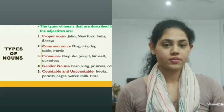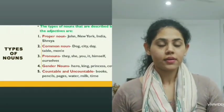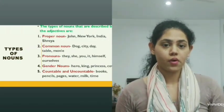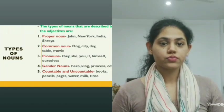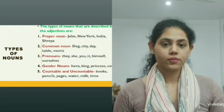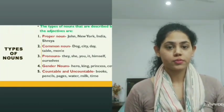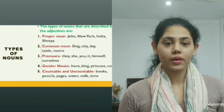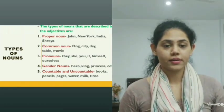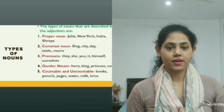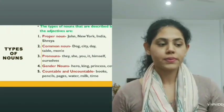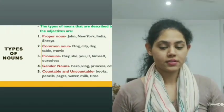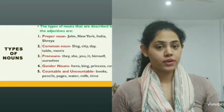So what are nouns and what are its kinds? You must have learned that nouns are of many types. For example, the common noun, proper noun, gender noun, countable and uncountable noun as well. All of these nouns are used while we try to identify the adjectives in a sentence. The common noun being: city, day, table, movie.